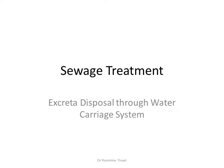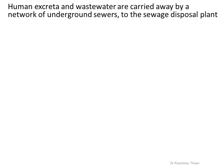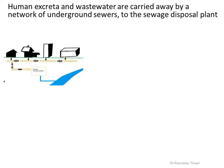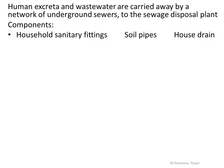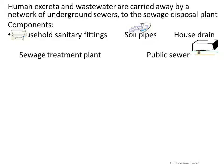Sewage Treatment. This is excreta disposal through the water carriage system. In this system, human excreta and wastewater are carried away by a network of underground sewers to the sewage disposal plant. Components of the water carriage system comprise household sanitary fittings, soil pipes, house drain, and public sewer, finally leading the sewage to the sewage treatment plant. The flow is from household sanitary fittings to soil pipes, to house drain, to public sewer, and finally to the sewage treatment plant.